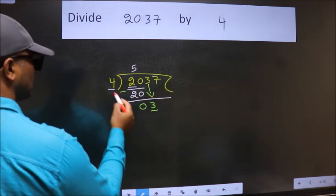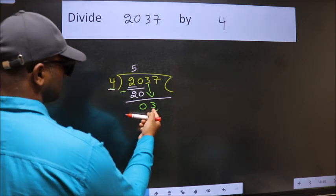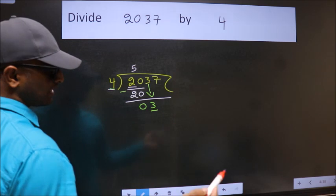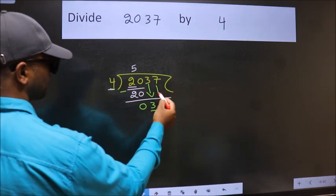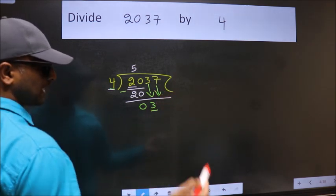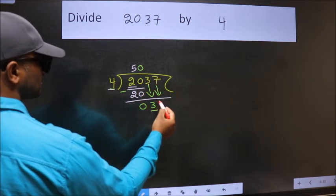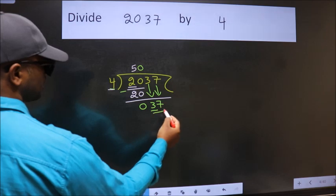Now, here we have 3 and here 4. 3 is smaller than 4, so we should bring down the second number. And the rule to bring down the second number is put 0 here. Then only we can bring this number down. So, 37.